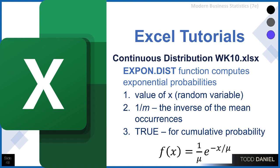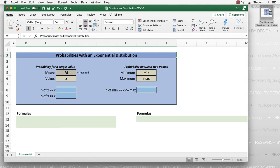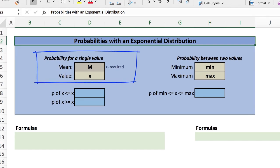The exponential distribution function has three arguments. The first is the value of x, the random variable. The second is the inverse of the mean, or 1 over m — 1 divided by m. And the third is TRUE, which gives us a cumulative probability. That's what we will use for all of these examples. If you open up the Continuous Distribution Week 10 Excel spreadsheet, you'll see it looks like this.